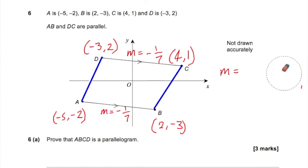And then we've got to do the same thing, which is quite tedious, for BC and AD. So for BC, we'll have 1 minus minus 3 over 4 minus 2. So we get 4 plus 3 is 4 over 2. So M equals 2 for BC. And finally, for AD, we'll have 2 minus minus 2 over minus 3 minus minus 5, which gives me 4 over 2. So we get M equals 2 again. Right, so then we can say, therefore, it is a parallelogram.